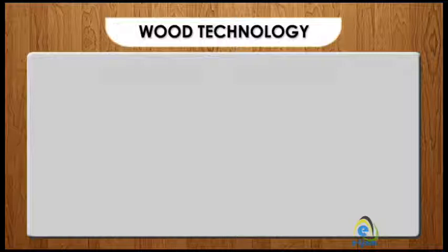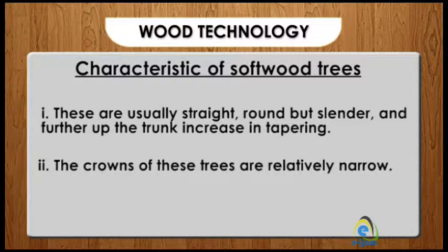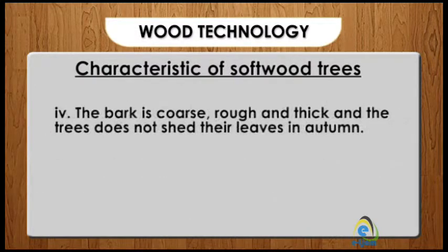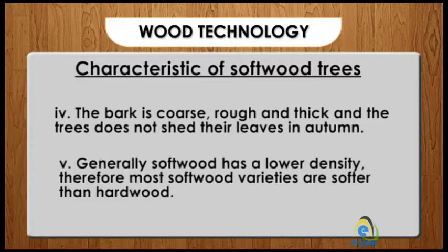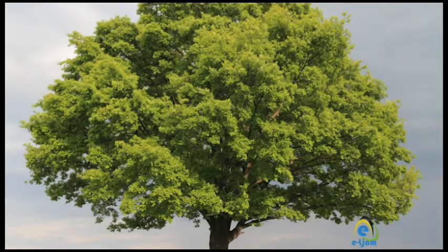Let us look at further characteristics of softwood trees. One: these are usually straight, round but slender, and further up the trunk increase in tapering. Two: the crowns of these trees are relatively narrow. Three: these have fine needle-like leaves. Four: the bark is coarse, rough, and thick, and the trees do not shed their leaves in autumn. Five: generally softwood has a lower density, therefore most softwood varieties are softer than hardwood.